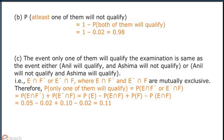Since E' is not E, meaning Anil will not qualify, and F' is not F, meaning Ashima will not qualify. Also, E' intersection F' equals E' intersection F' by De Morgan's law. Now P of E union F is equal to probability of E plus probability of F minus probability of E intersection F, which is 0.05 plus 0.10 minus 0.02, which is 0.13. Therefore, probability of E' intersection F' equals probability of (E union F)', which equals 1 minus probability of E union F, which is 1 minus 0.13, that is 0.87.